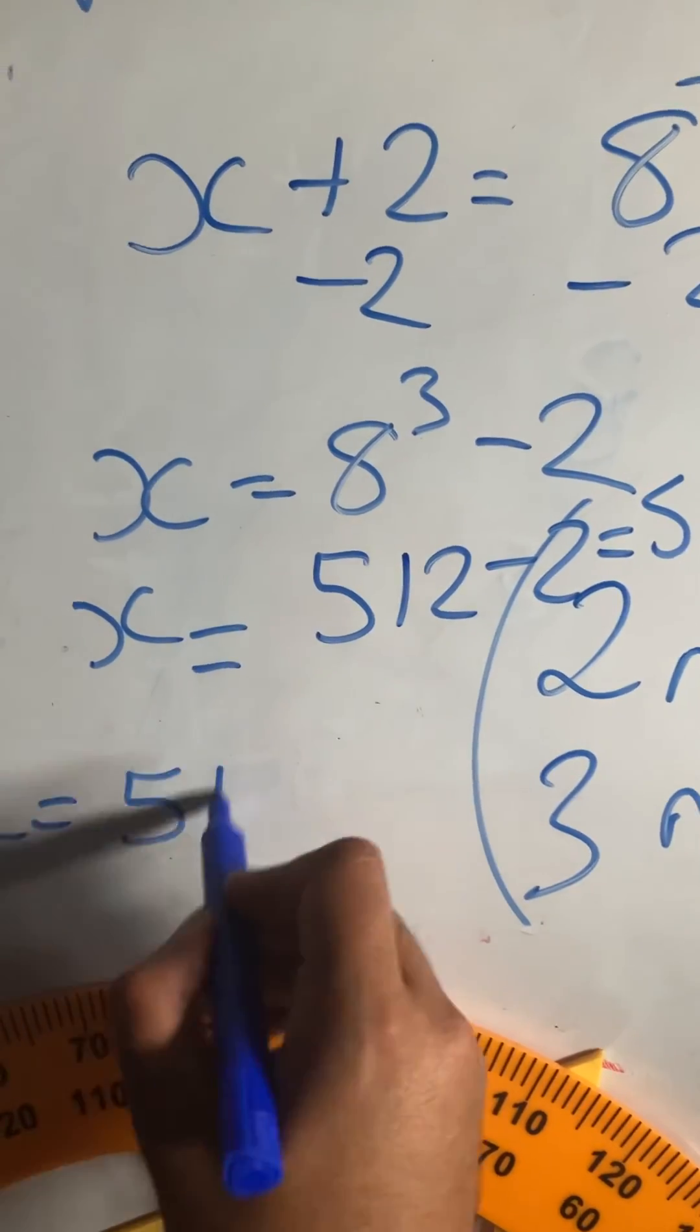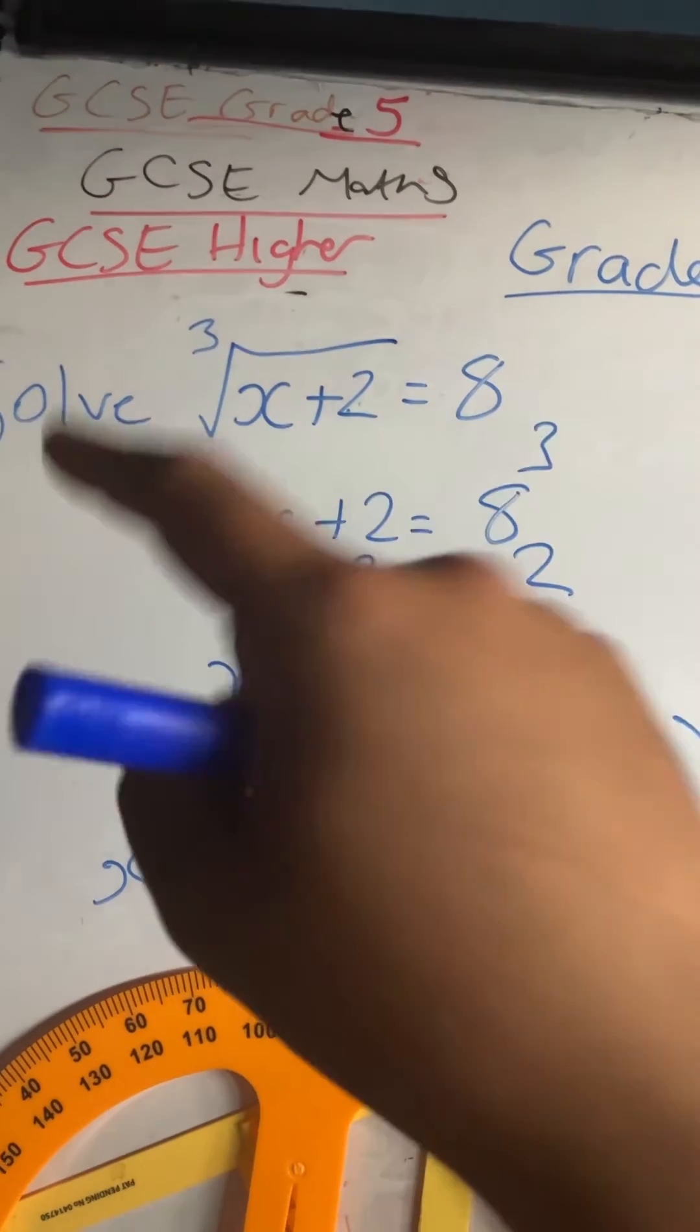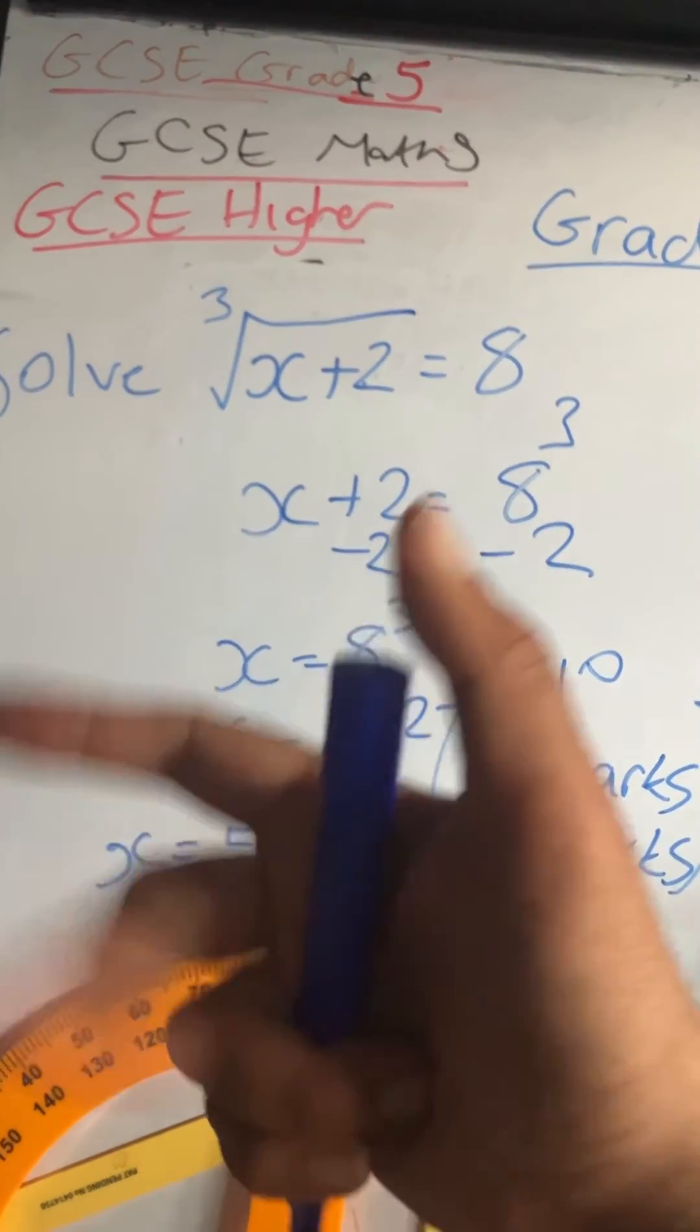So 8 cubed means 8 times 8 times 8. 8 times 8 is 64, and 64 times 8 is 512.